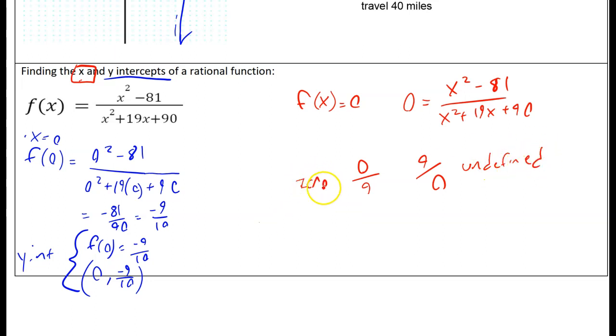Here's the catch though. Before we do that, we need to factor first. On the top is the difference of squares. On the bottom, we want two numbers that multiply to 90 and add up to 19, and those are 9 and 10. Notice we would have gotten this wrong if we had not done this because this cancels out. So this particular rational function has only one x-intercept.